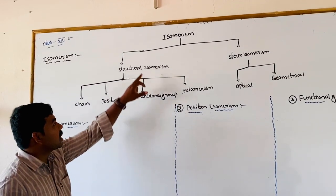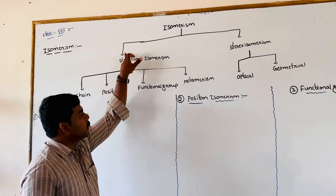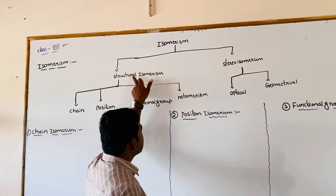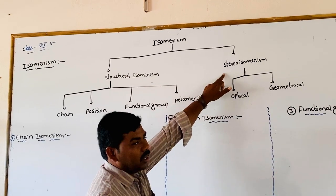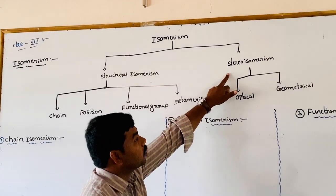Isomerism is classified into two types: structural isomerism and stereo isomerism.